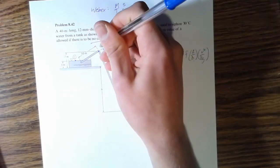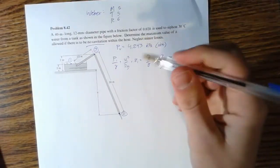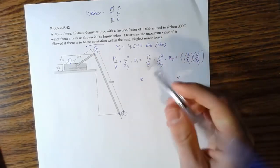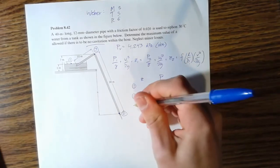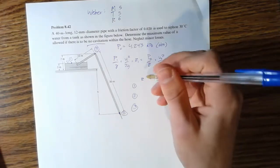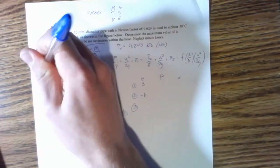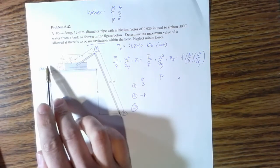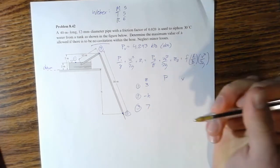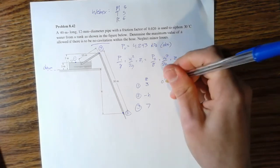So we have z, p, v for points 1, 2, 3. Our z1 we're going to call 3, z2 we're going to call negative h, so right here's my datum where my zero is, and point 3 is going to be 7 meters.